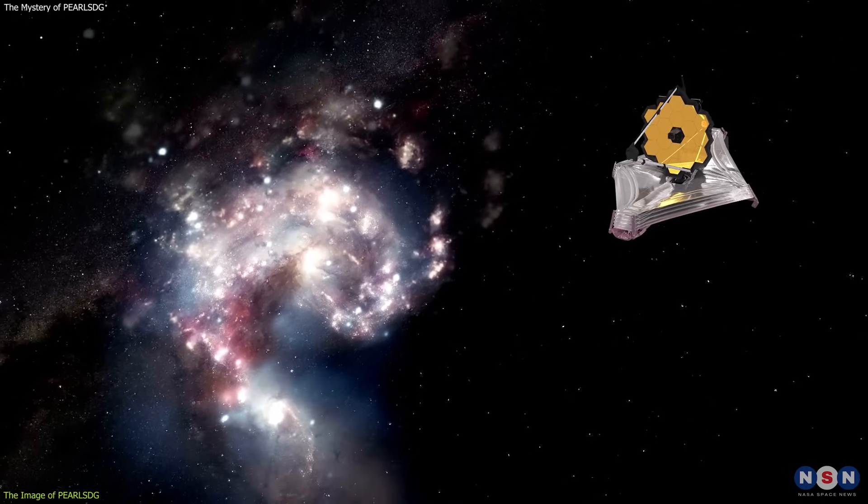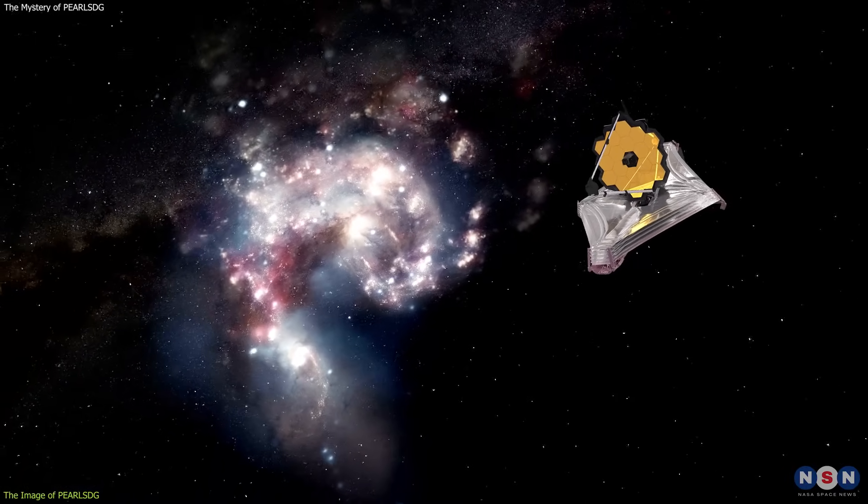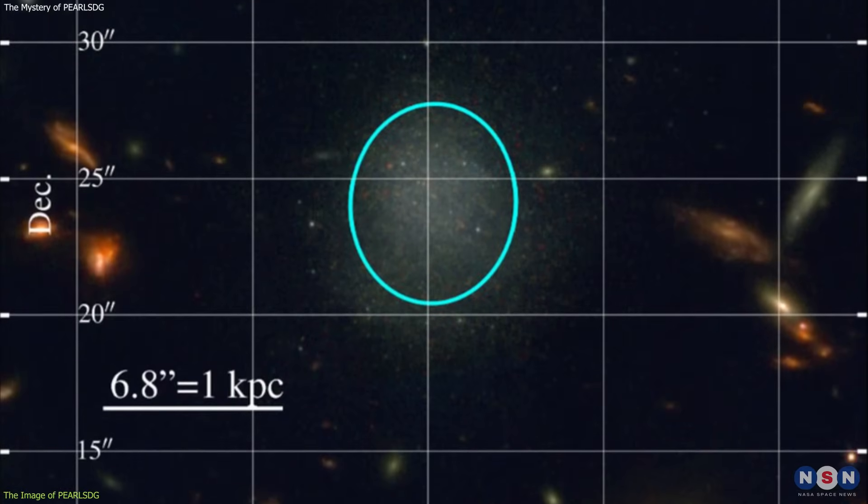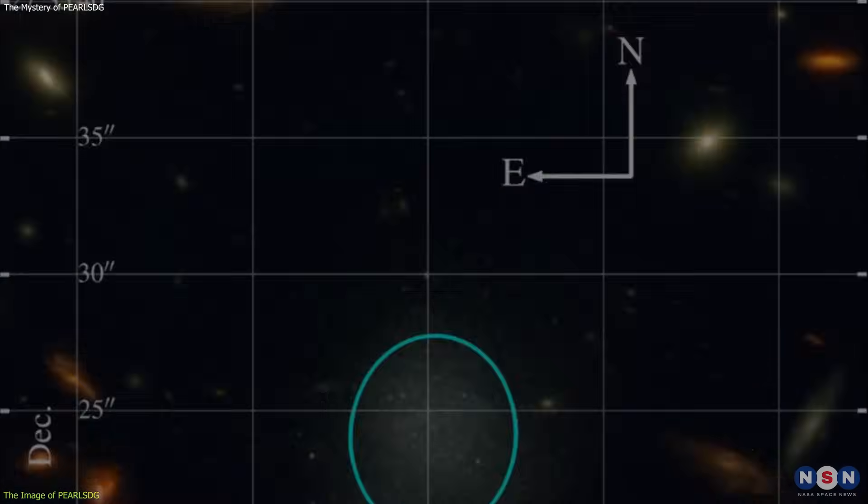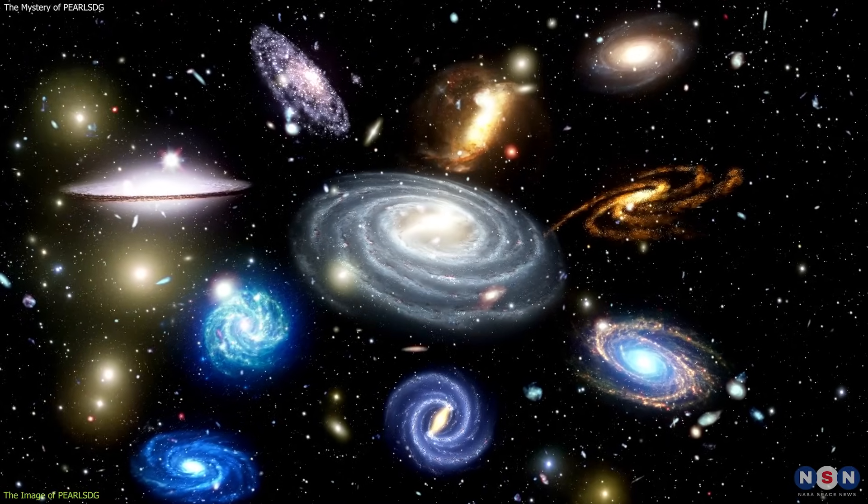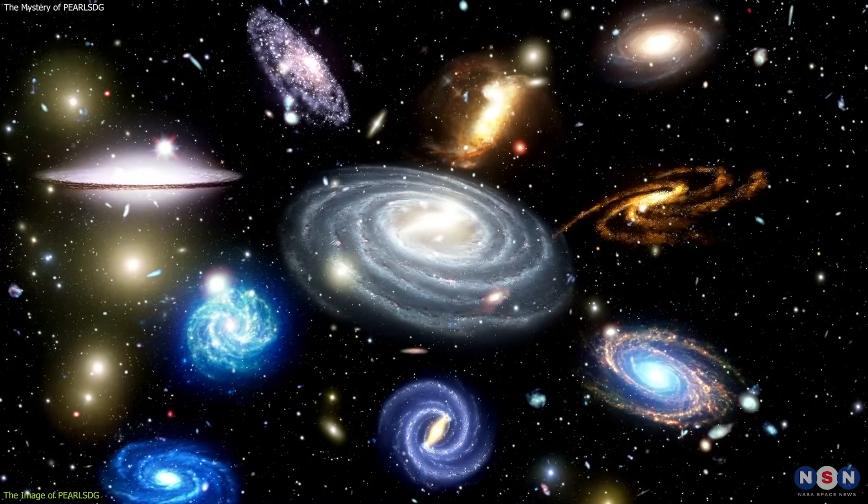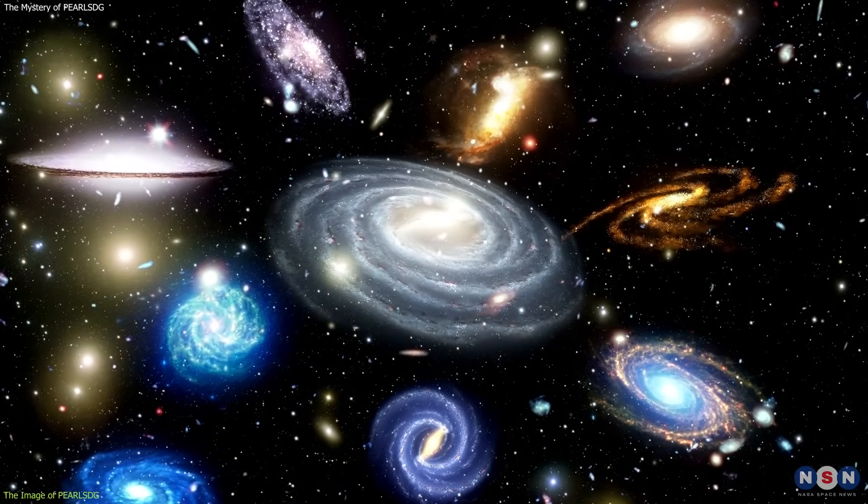These galaxies are part of the galaxy cluster that Webb was originally observing, and they are much closer and younger than PEARLS DG. They have a bluer and more varied color, which reflects their higher luminosity, mass, and metallicity.